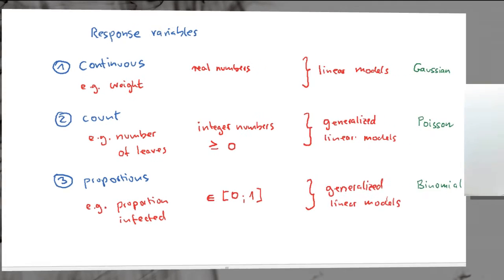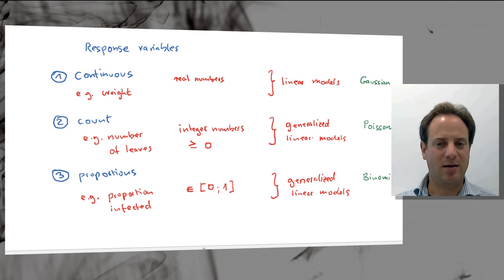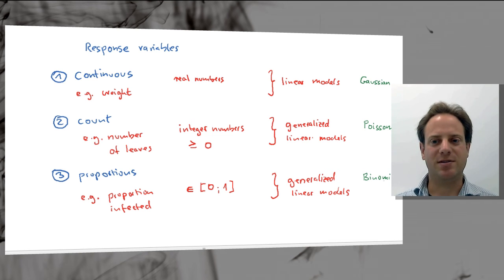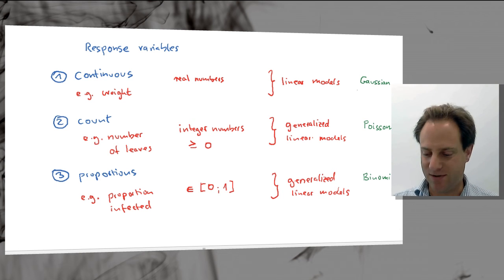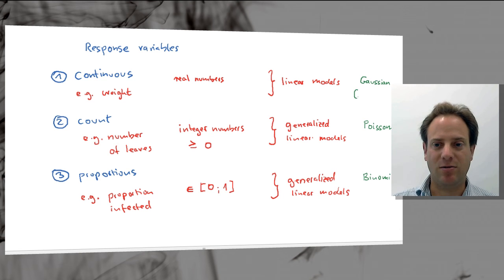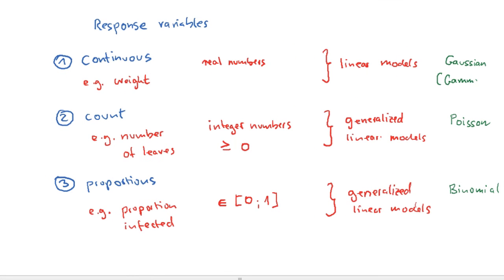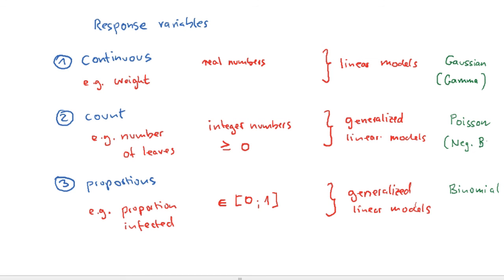Sometimes you encounter response variables that behave a bit more strangely. You may end up with situations where, for example, you need to use gamma errors for continuous variables, or negative binomial errors in the case of count data. I just mention these here — you don't need to know what they are yet, but we'll come back to that later on.